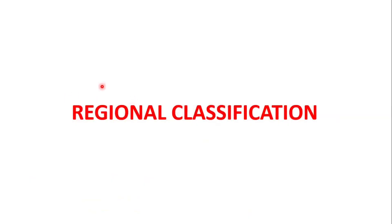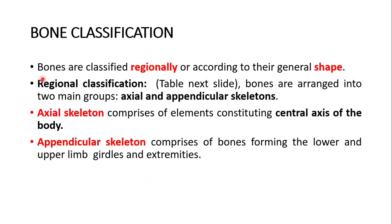So the regional classification. The first classification type is regional bone classification. Bones are classified according to their general shape. Bones are arranged into two main groups: axial skeleton and appendicular skeleton. The axial skeleton comprises elements forming the central axis of the body, and the appendicular skeleton comprises bones forming the lower and upper limb girdles and extremities.